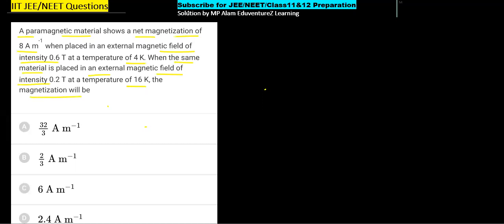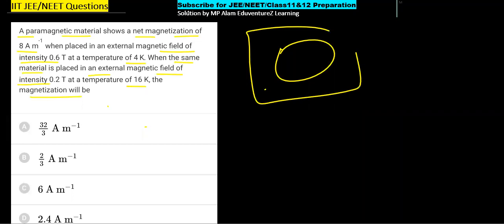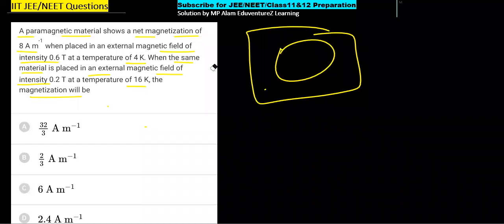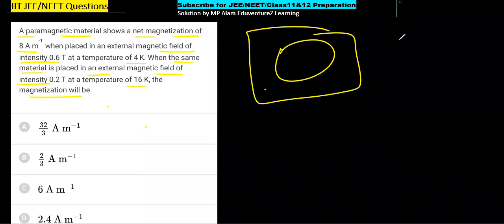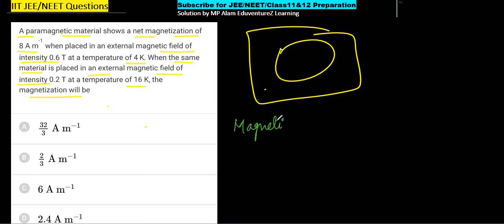तो देखिए, अगर आप किसी भी magnetic material को external magnetic field में रखते हो तो उसका magnetization होगा। जो intensity of magnetization है वो directly proportional होगा magnetic field के, और inversely proportional होगा temperature के। तो magnetization M directly proportional होगा magnetic field B के, और magnetization inversely proportional होगा temperature T के।